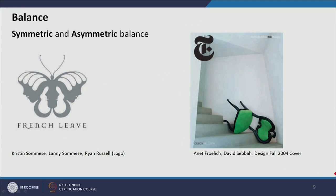Here we can see an example of asymmetric balance, where a chair is balanced by a heavy typographic element. The letter 'T' is not a simple design — there are a lot of curves and different shapes assembled within the typography. The curves and lines of the typography also balance the curves and lines present in the chair, making this a good example of asymmetric balance.